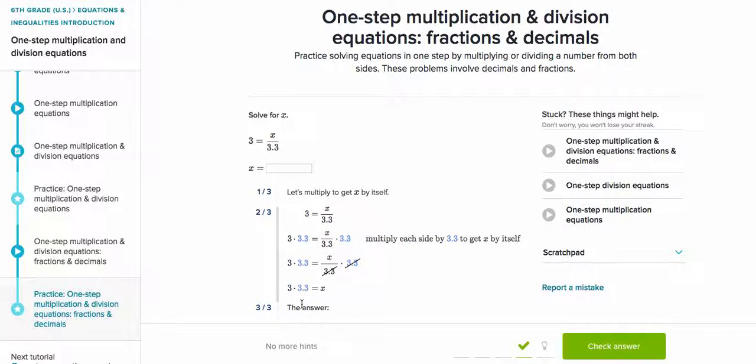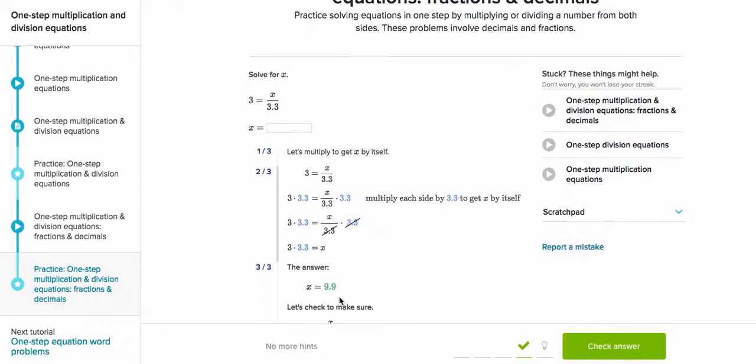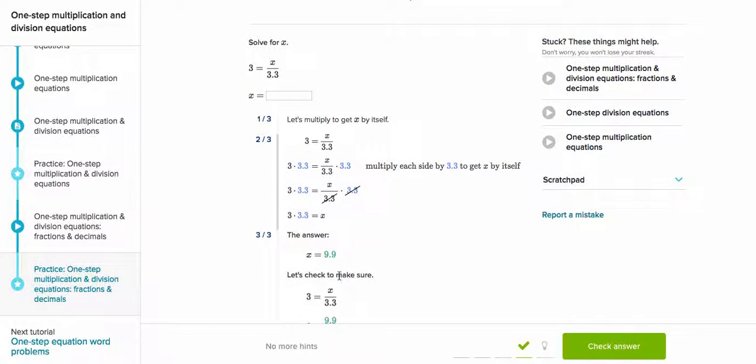And so it becomes 3.3 multiplied—so the dot means multiplication—3 multiplied by 3.3 is equal to x. So the answer is going to be x is equal to 9.9.